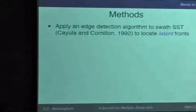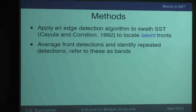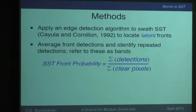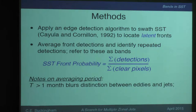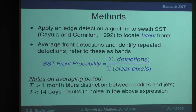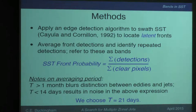We applied an edge detection algorithm — a front detector — to swath SST, averaged detections over about 21 days, and identified repeated detections. We refer to the resulting patterns as bands. SST front probability is defined as the sum of detections divided by the sum of clear pixels at a given latitude, longitude, and time period. Averaging period T greater than one month blurs distinctions between eddies and jets; T less than 14 days results in noise. So we chose T of about 21 days.